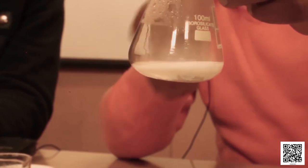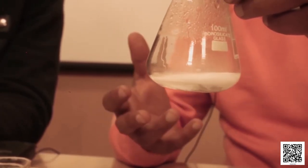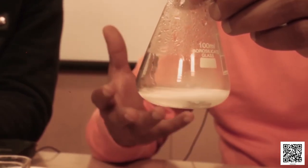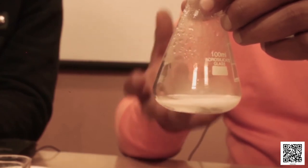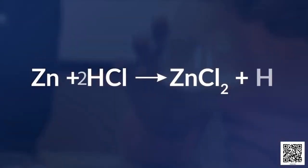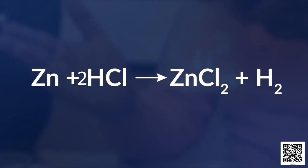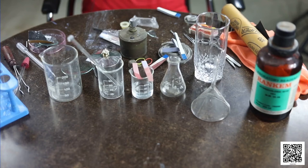Adding dilute HCl drop by drop — the reaction has already started and we can see bubbles forming in the flask. Bubbles are produced when a liquid substance changes into gaseous form, like boiling of water. Zinc reacts with hydrochloric acid to form zinc chloride and hydrogen gas: Zn + HCl → ZnCl₂ + H₂. The hydrogen gas comes out in the form of bubbles.